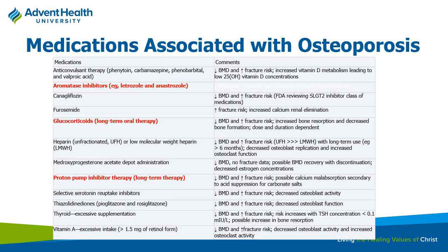There are medications associated with osteoporosis. Most come down to messing with steroids in the body. Aromatase inhibitors convert androgens into estrogen—so if you inhibit aromatase, say in someone with treatment-resistant breast cancer, you're decreasing estrogen production and essentially making them menopausal. Glucocorticoids also have negative effects on bone, especially with long-term use—think about rheumatoid arthritis patients on daily prednisone.